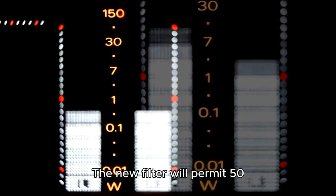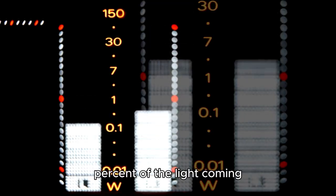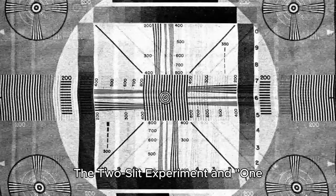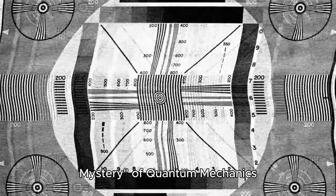The new filter will permit 50% of the light coming through the horizontal filter to pass. Then, because the new filter is also diagonal relative to the vertical filter, the vertical filter will permit 50% of the light to pass through. The two-slit experiment and one mystery of quantum mechanics.